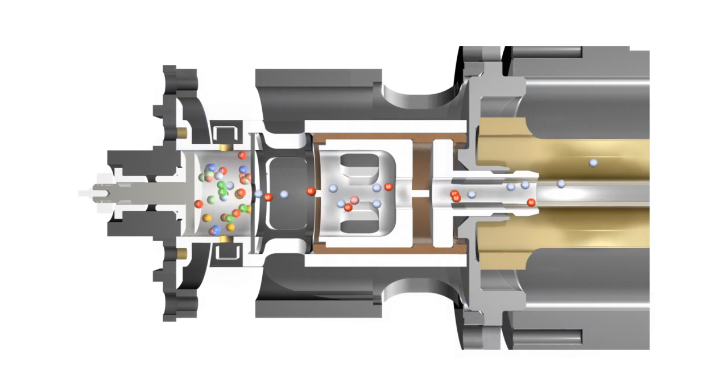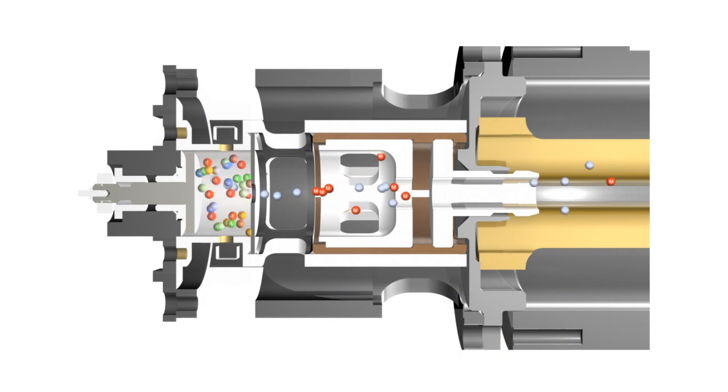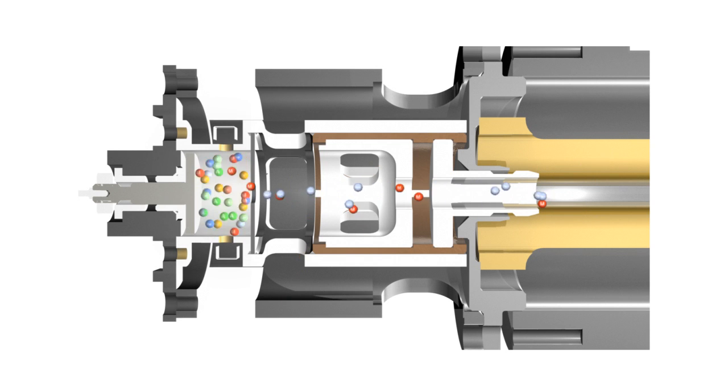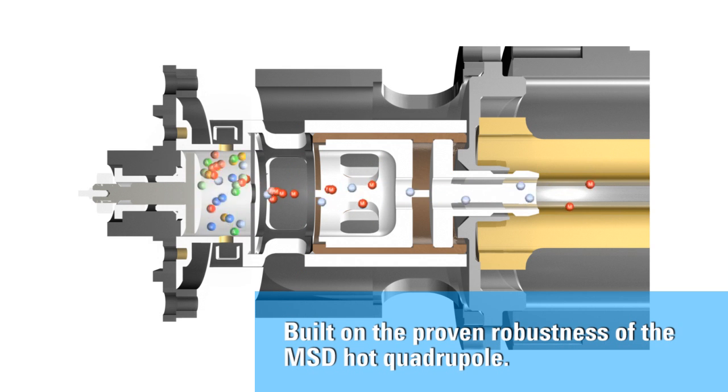The Agilent 7000A uses a combination of proprietary and patented technologies to avoid contamination problems and ensure robust, high performance operation. These include an inert source operating at up to 350 degrees Celsius, and quartz quadrupole operating at up to 200 degrees Celsius. With 35 years of MS experience, Agilent built the 7000A around the unique hot quartz analyzer of the MSD, not the cooler metal quadrupole rods used for LC-MS-MS.